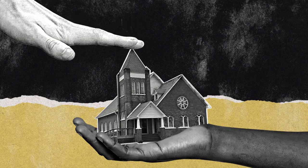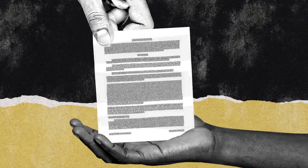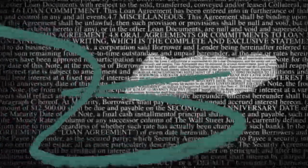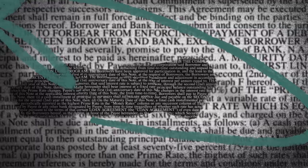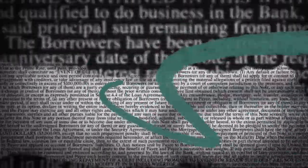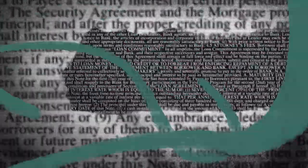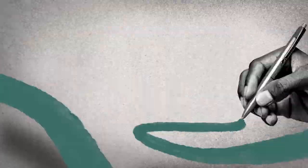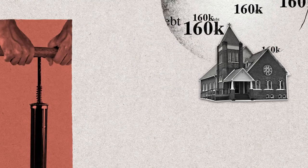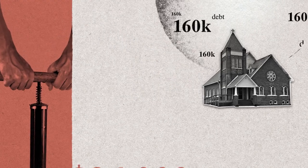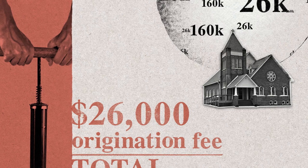Swayed by the broker's false reassurances, Rev. Hargraves ended up pledging the church property to secure a $160,000 loan from Capital City Mortgage. The loan document Rev. Hargraves signed had many key terms left blank, such as the interest rate, monthly payments, and duration of the loan. Capital City refused to give Hargraves a copy of these documents. At the closing of the loan, Hargraves discovered for the first time that the loan had a $26,000 origination fee.